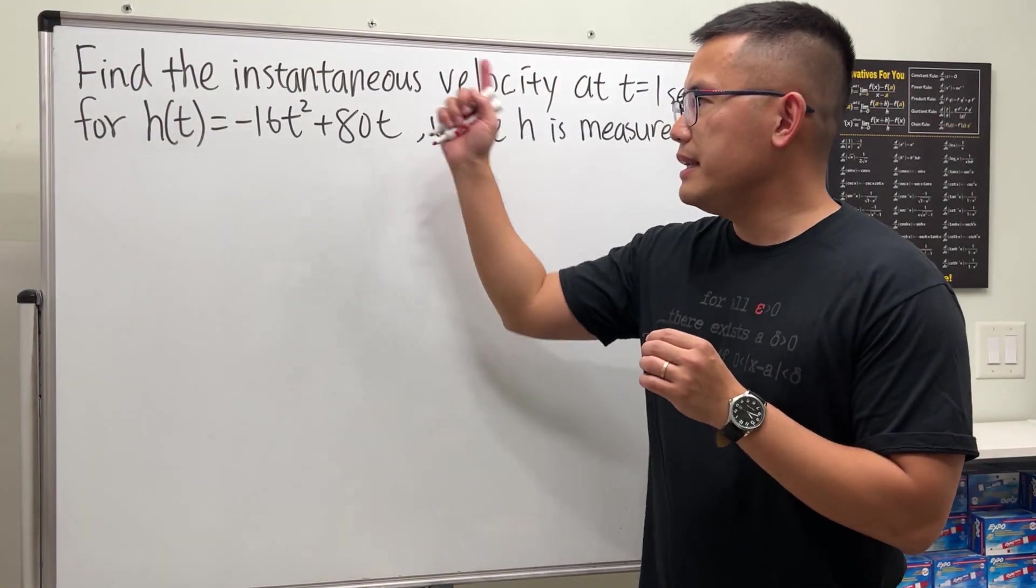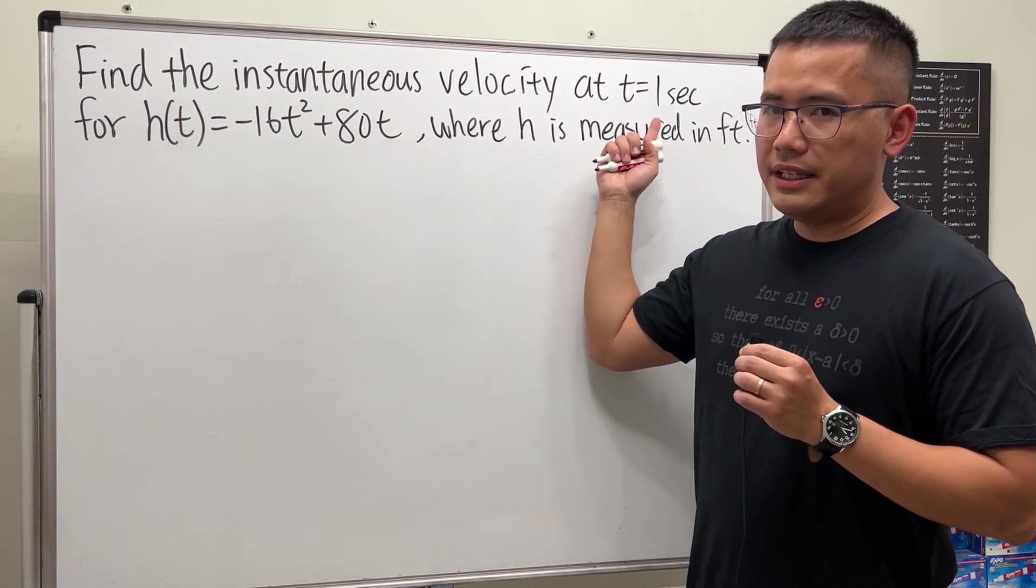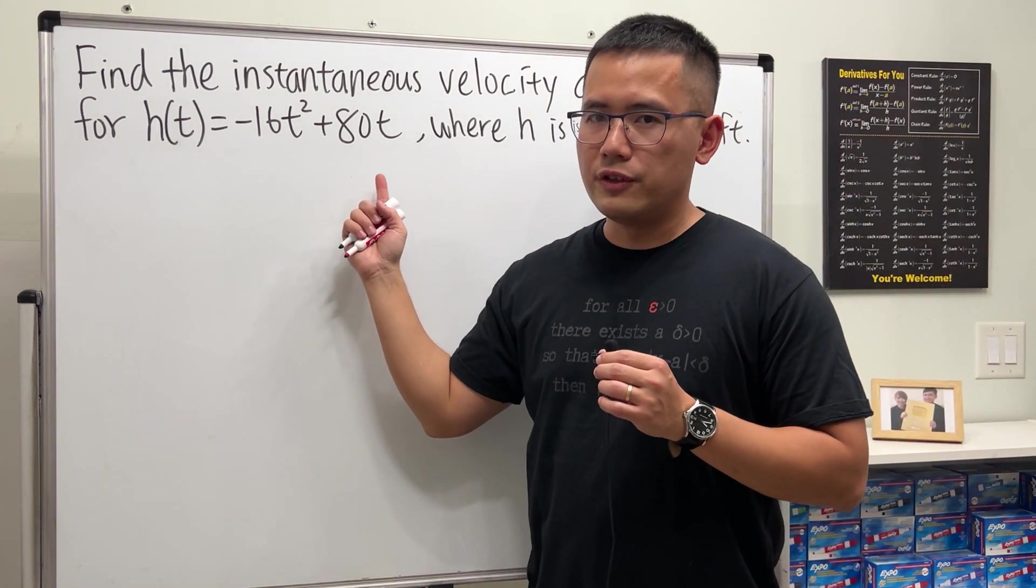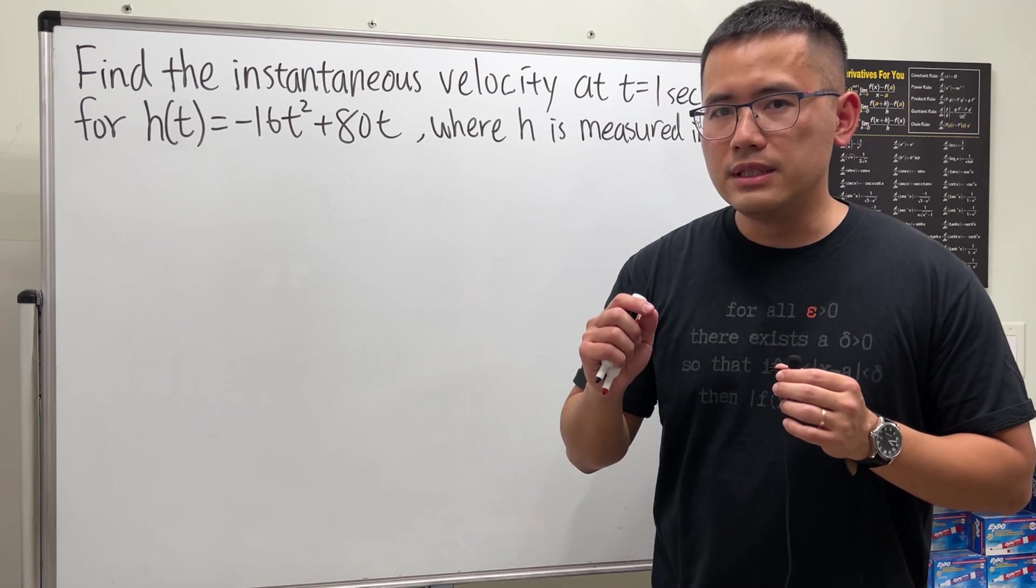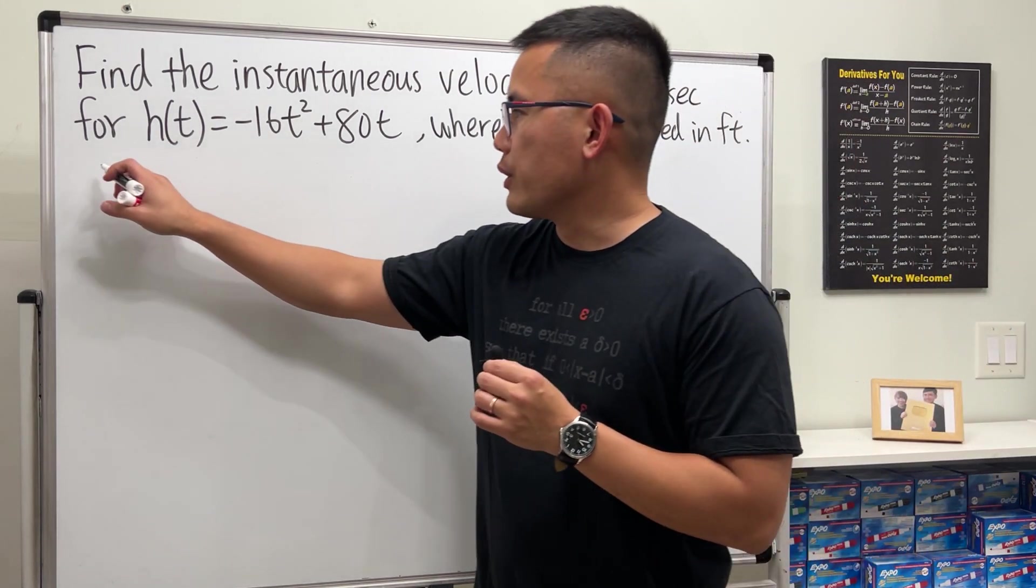Let me show you guys how to find the instantaneous velocity at t equals 1 for this position function. And this is calculus 1. We will first do this by using the limit definition. So here we go.